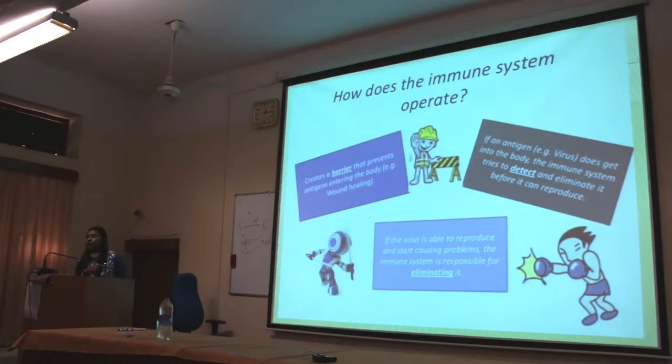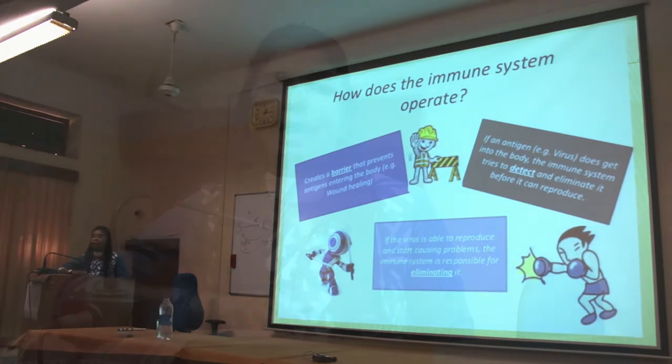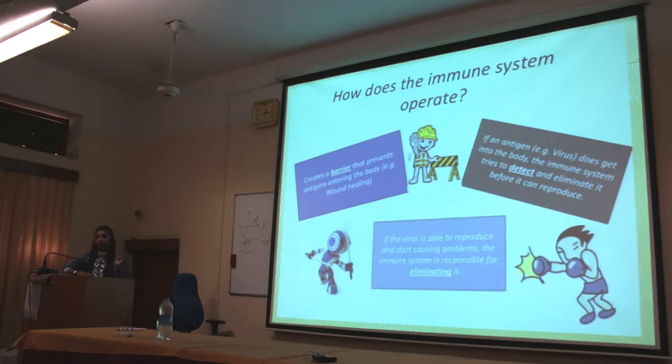How does the immune system operate? It operates at three levels. Primarily, if any antigen is entering our body, we have a well-developed system that does not allow it to enter — like skin, which forms a covering over our body. That barrier in the form of skin provides primary immunity. If a pathogen does enter, such as through inhaled air, the immune system at the secondary level tries to detect and eliminate it before it can reproduce.